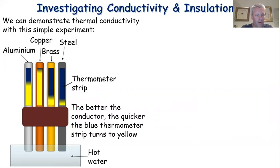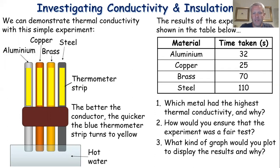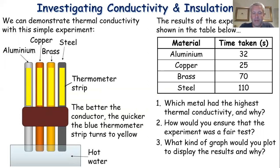The copper changes colour very quickly, with aluminium next, then brass and steel changing more slowly. The results show: aluminium took 32 seconds, copper 25 seconds, brass 70 seconds, and steel 110 seconds. Now answer three questions: which metal had the highest thermal conductivity and why, how would you ensure the experiment was a fair test, and what kind of graph would you plot to display the results and why? Pause the presentation and have a go at answering those questions.